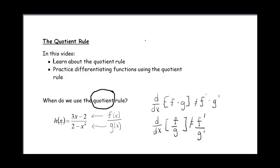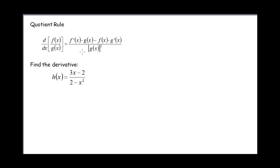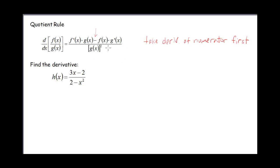So let's look at what the actual quotient rule is. The quotient rule tells us that when we have one function divided by another function, we take the derivative of the numerator times the denominator, minus the numerator times the derivative of the denominator. Notice that there's a subtraction symbol here, so it's really important which function you take the derivative of first — you take the derivative of the top function, the numerator, first. And then this is all divided by the denominator squared. When we learn the chain rule, you'll be able to see why we have this somewhat complicated rule.